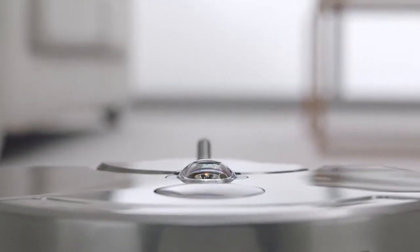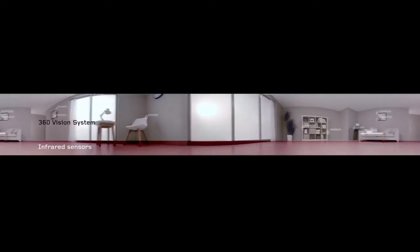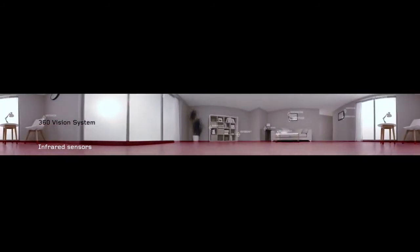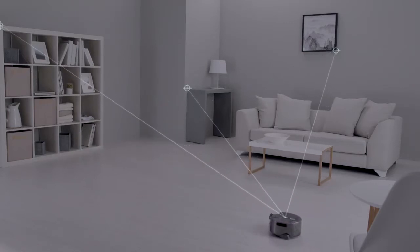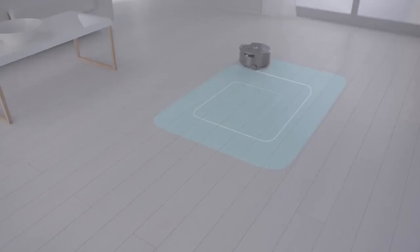A unique 360-degree vision system sees all the way around itself at once, selecting reference points to track and triangulate its position so it knows where it is, where it's been, and where it is yet to clean.